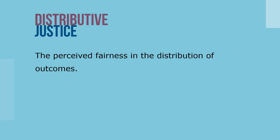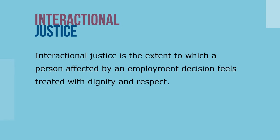Second, people obviously prefer favorable outcomes for themselves. They decide the favorability of their outcomes by comparing them with the outcomes of others given their relative situations. This decision involves the concept of distributive justice, which is the perceived fairness in the distribution of outcomes. Disciplinary action based on favoritism, when some are punished and others are not, would likely be viewed as unfair. Interactional justice is the extent to which a person affected by an employment decision feels treated with dignity and respect. Is an adequate explanation provided? Is the employee treated consistently and professionally?